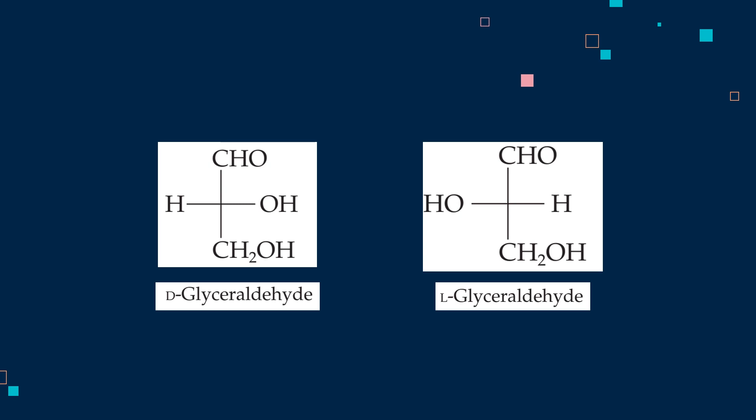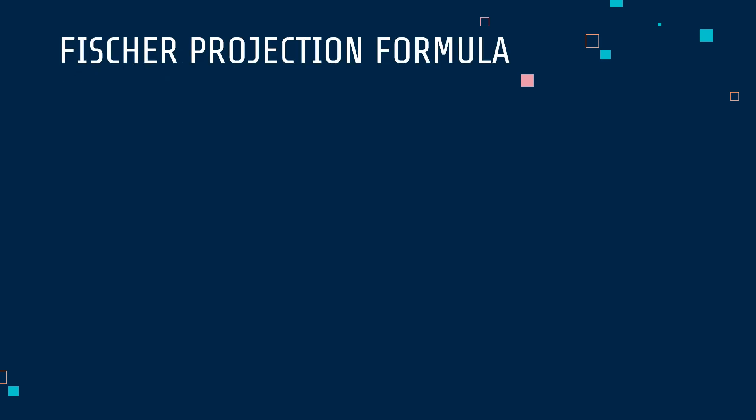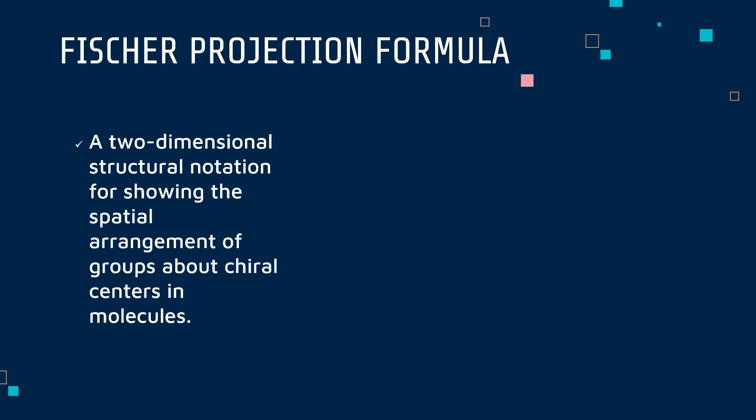This particular method of drawing glyceraldehyde is the basis for what we call the Fischer projections. In Fischer projections, a carbon atom sits at each intersection of a vertical and horizontal line. The horizontal lines represent bonds pointing toward the viewer, and the vertical lines are for bonds pointing away from the viewer.